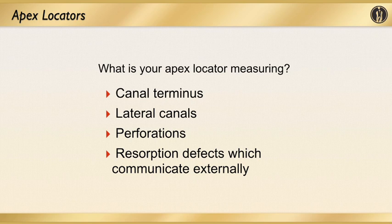An apex locator will also read defects where resorption is communicating externally. If there's a resorptive defect on a root, your apex locator isn't going to read a canal terminus — it's going to be reading where that defect is along the root. For the most part, your apex locator is reading four things: your canal terminus, where lateral canals are, helping to determine if there's a perforation or not, and where resorption defects are that can communicate externally.